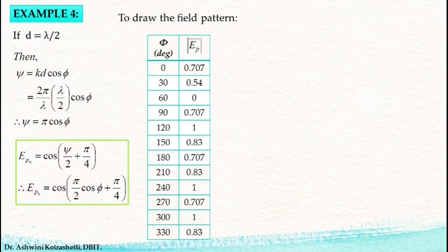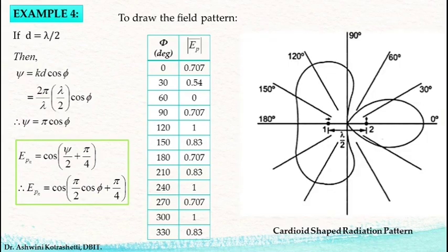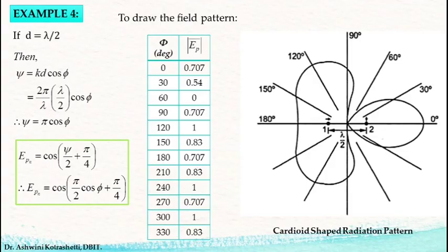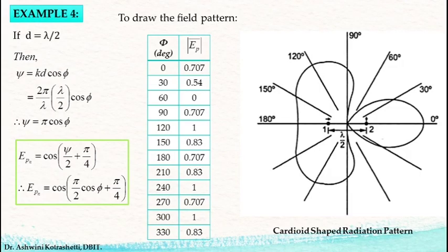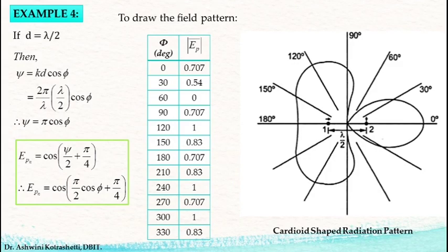Plotting the tabulated values, this radiation pattern — taken from Kraus's textbook 'Antennas' — is called the cardioid shape radiation pattern. The cardioid is a unidirectional pattern with maximum field in the negative x-direction; most of the radiation is in the second and third quadrants. The field in the direction of φ = 0 degrees equals the field at φ = 180 degrees, and the angles of maximum radiation are at φ = 120 degrees and φ = 240 degrees.